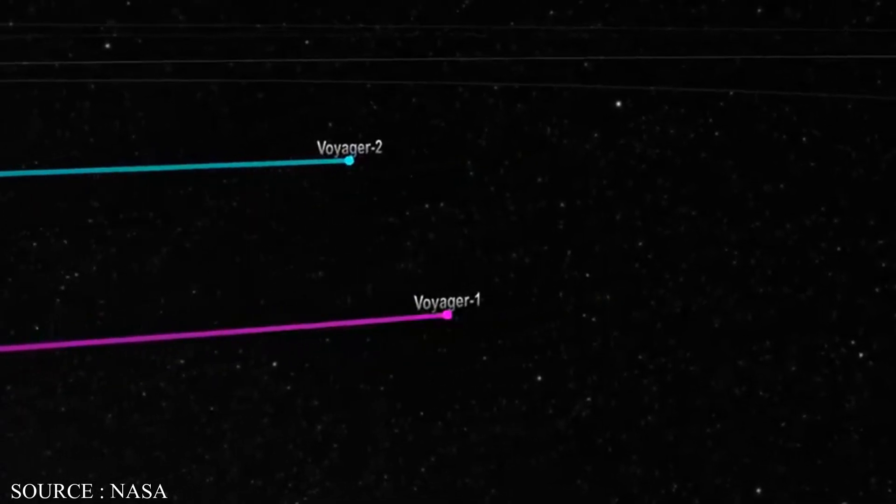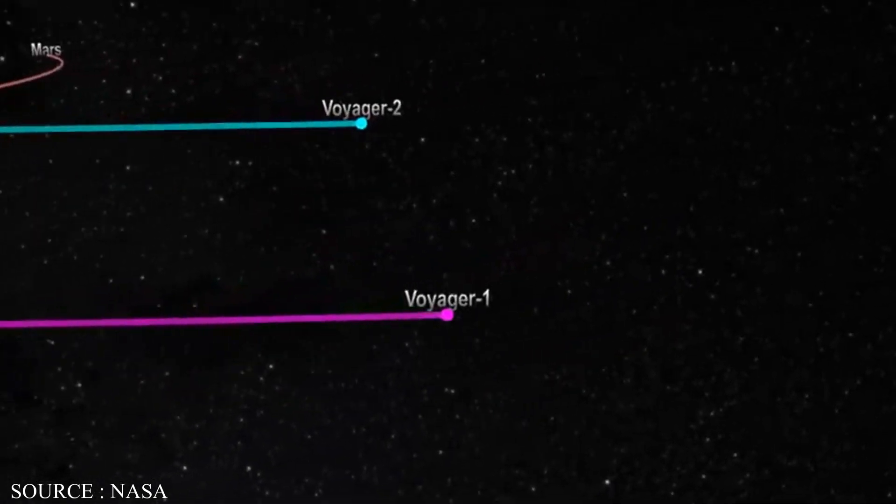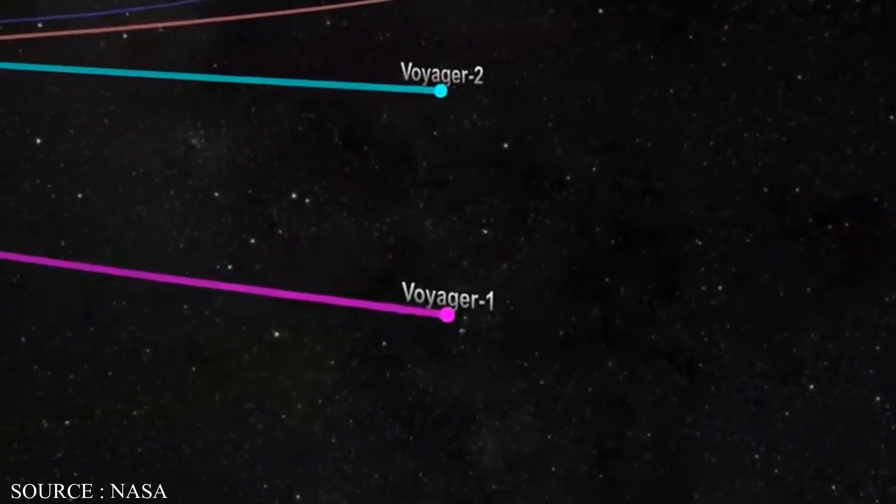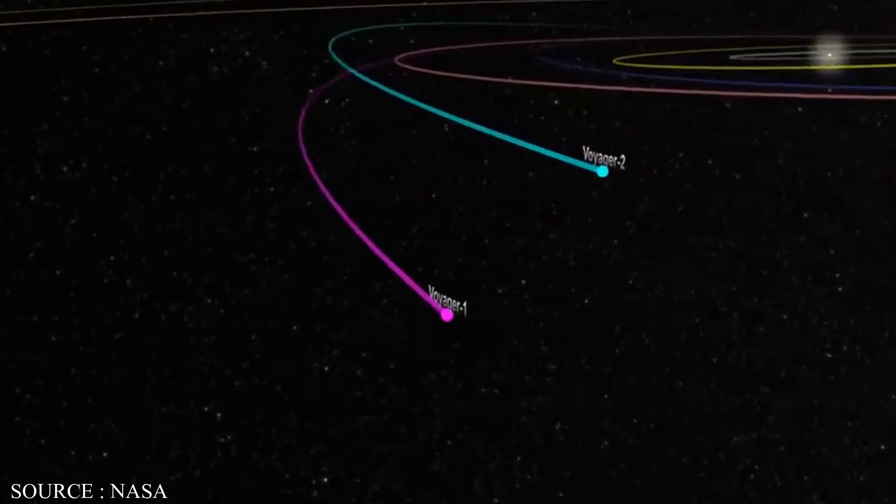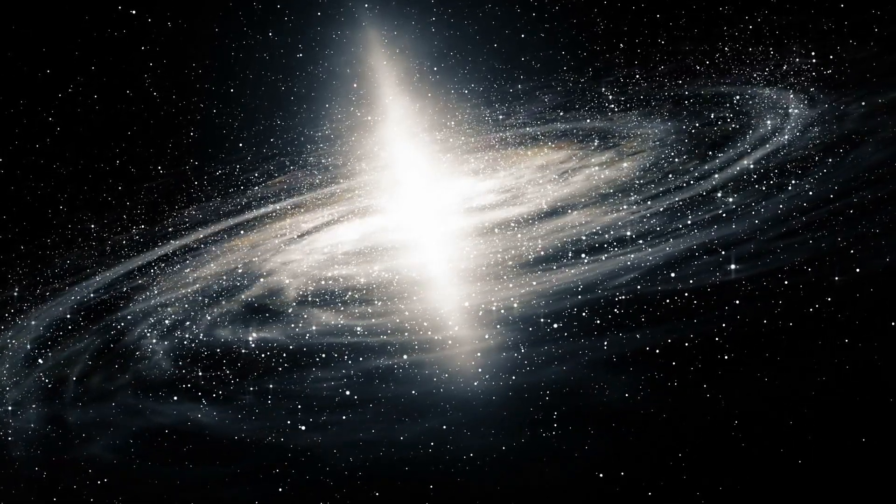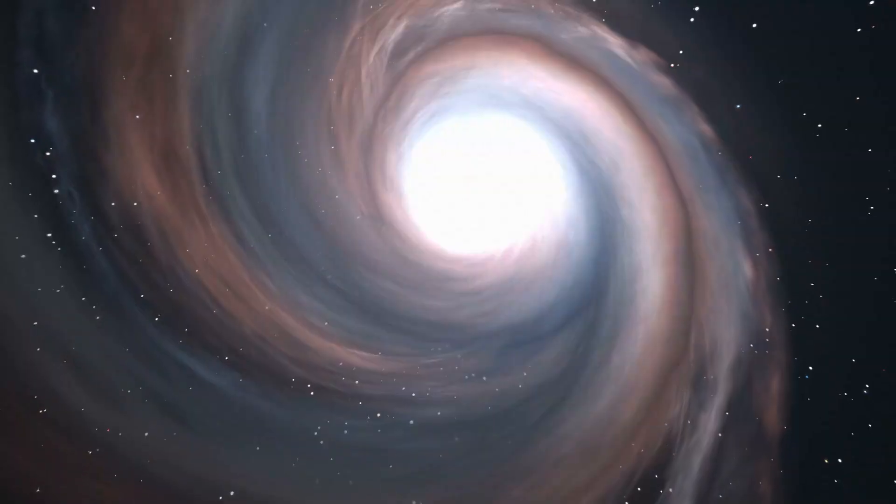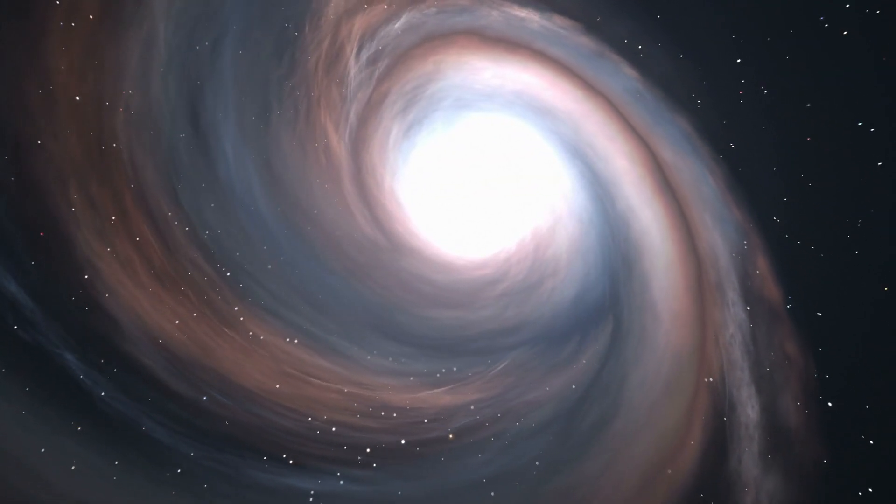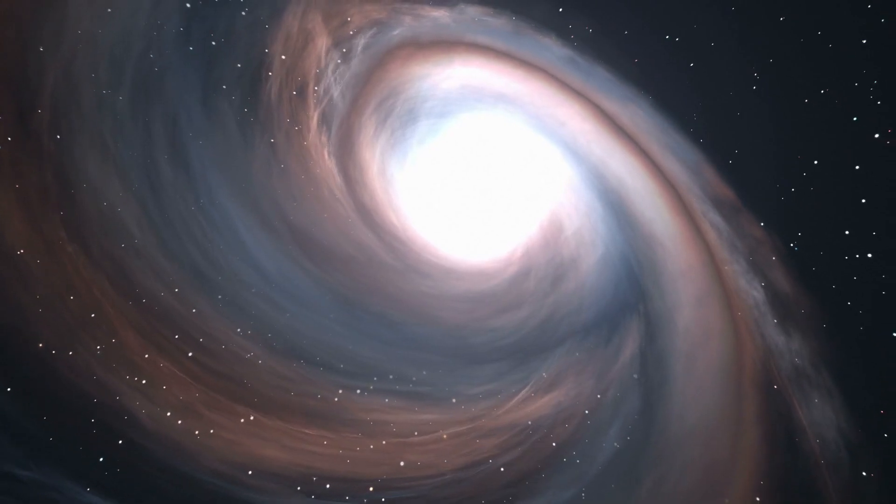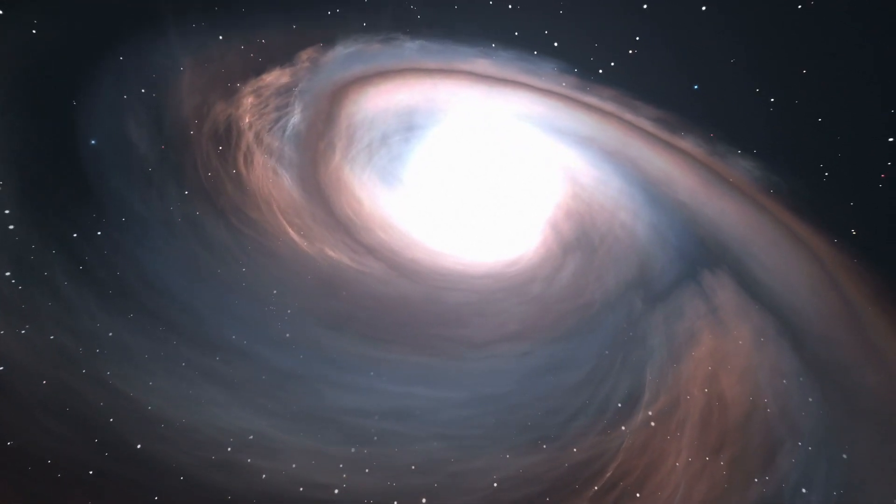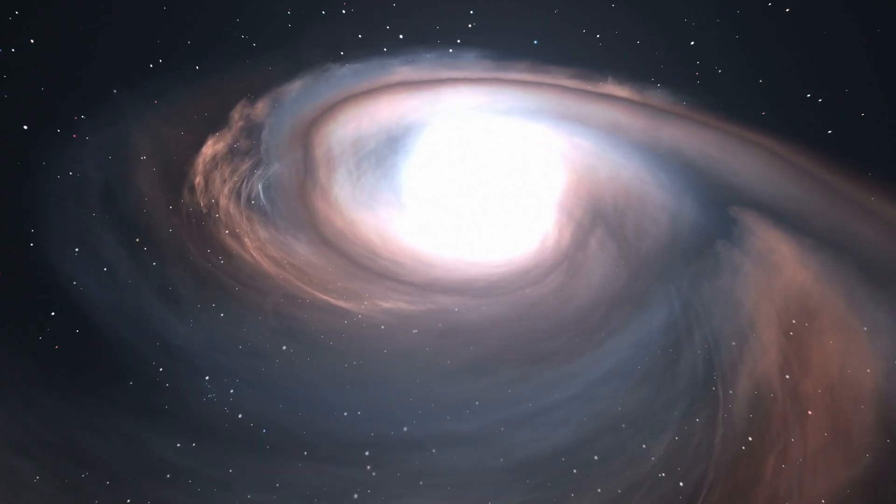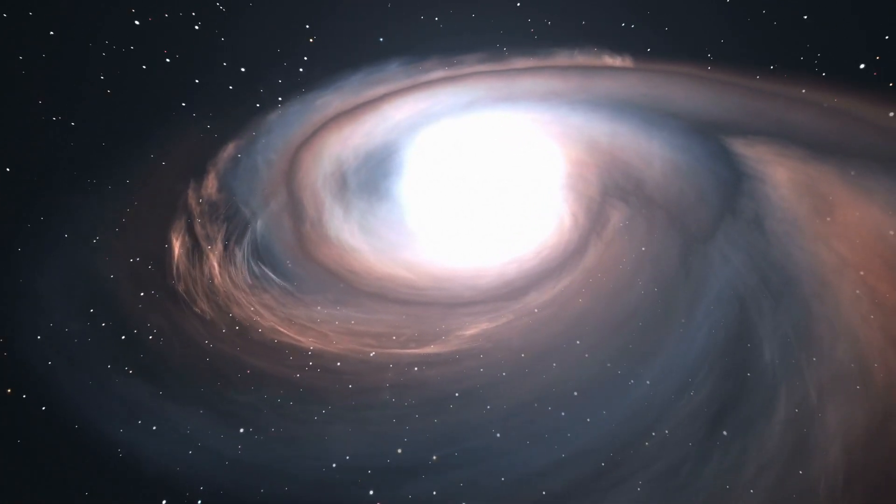As Voyager 1 and Voyager 2 continue their quiet journey into the unknown, they ask us to think about more than just the amazing things in our solar system. One idea that really makes this clear is the cosmic year. This is how long it takes for our solar system to go around the center of the Milky Way once, which is about 225 million Earth years.